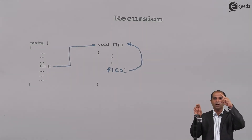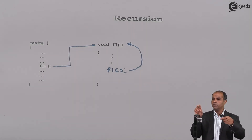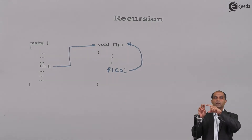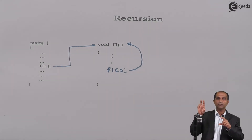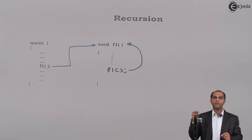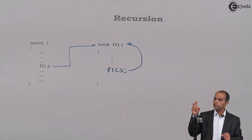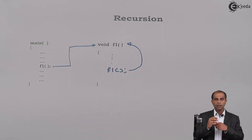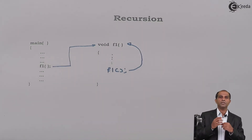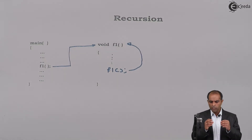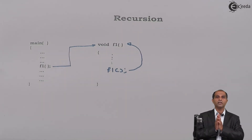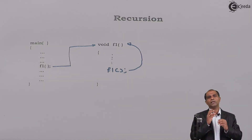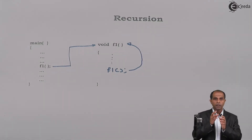When main calls f1 and f1 calls f1 again, it gives a call to its copy, consuming more memory. Within that copy, if f1 calls f1 again, one more copy of the same function is created. Logically, this might end up in infinite operations and will definitely consume a lot of memory.